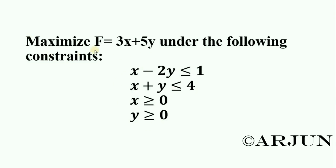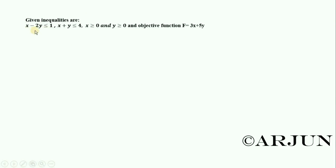Let's start. The solution is here. Given inequalities are: x minus 2y is less than or equal to 1, x plus y is less than or equal to 4, x is greater than or equal to 0, y is greater than or equal to 0. And the objective function is 3x plus 5y.